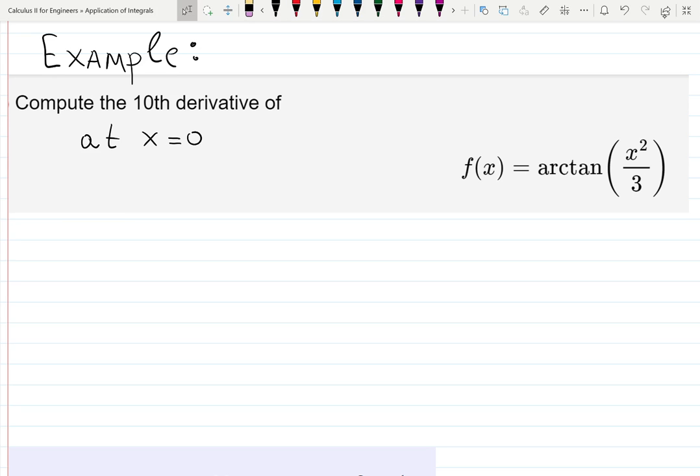Welcome to the video where we're going to be working with the example where we are asked to compute the 10th derivative at 0 of the given function, arctangent of x squared over 3. This is a little bit unusual example, so let's pay attention.